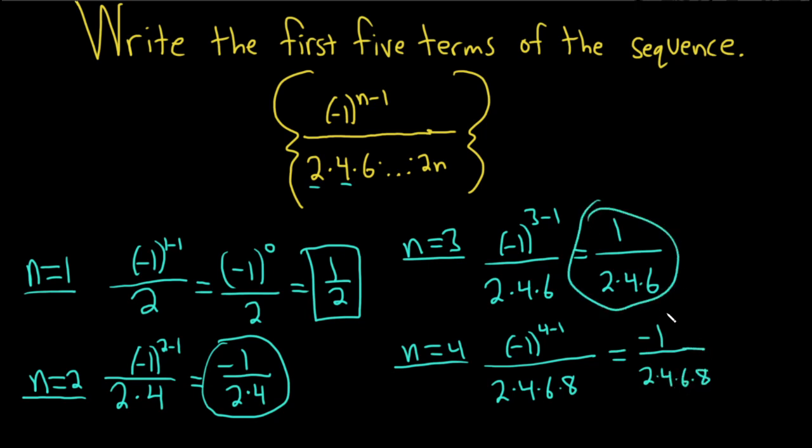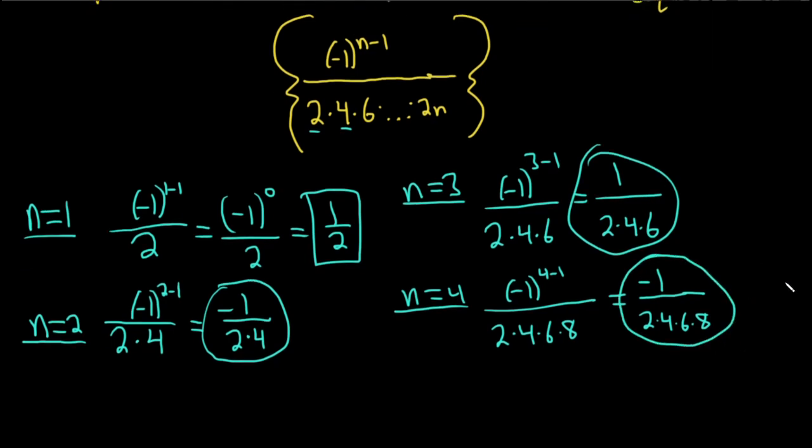We have one more and we're done. When n equals 5, you plug in 5, so you get negative 1 to the 5 minus 1. This time we have 2, 4, 6, 8, 10. I'm glad we're not multiplying these—it's a big multiplication.